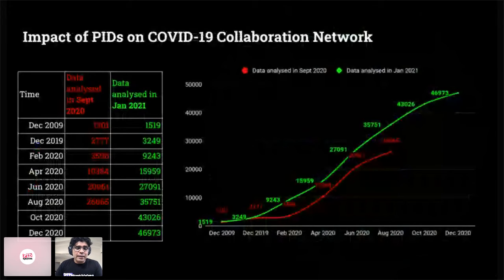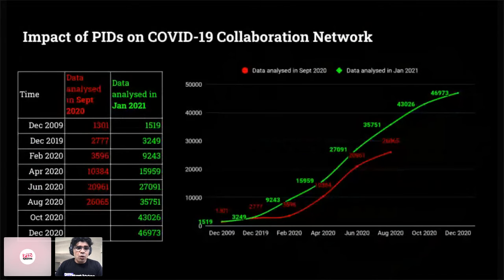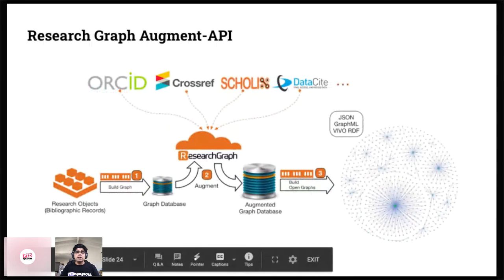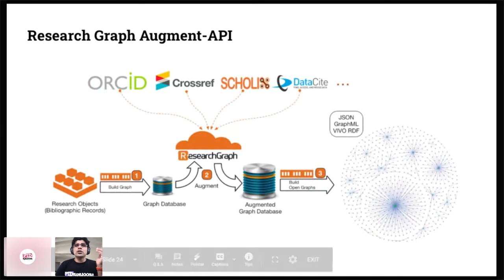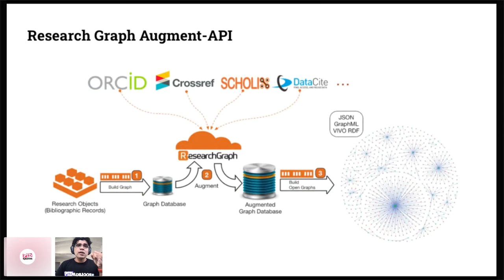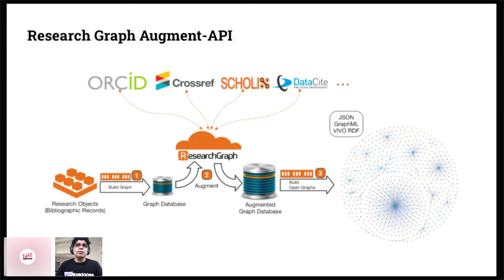For those interested in how the collaboration network was formed: we used the Research Graph Augment API, which enriched the data and allowed us to build this network. The research objects or bibliographic records come from the Research Graph corpus, on which we applied search terms like COVID-19, coronavirus, and SARS-CoV-2 — searching for any mention in the abstract, body, or title of the paper. We then put those results into the graph database and augmented them via the Research Graph Augment API, which in turn pulls data from ORCID, Crossref, Scholix, and Datasuite to build the graph.